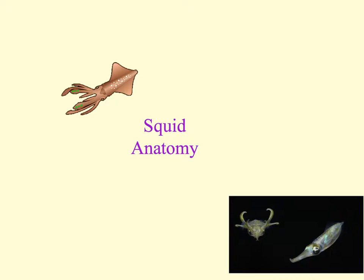The main unifying characteristics that all Mollusca share is a soft body consisting of similar parts. The body plan will also have a mantle, a visceral mass, a head, and a muscular foot. The mantle is the sheath of skin that surrounds the open space called the mantle cavity, which will house the respiratory organs and the visceral mass.